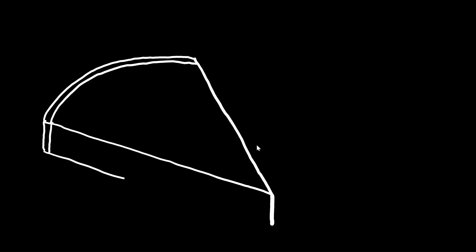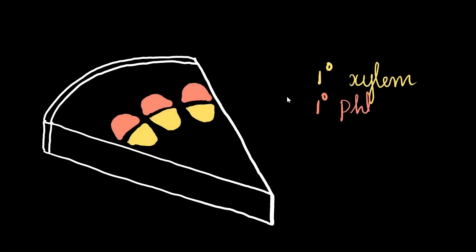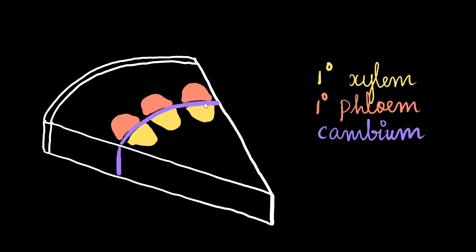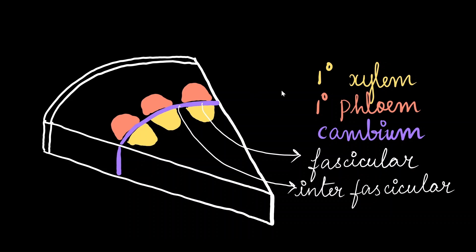So this is a look at the vascular bundles in our dicot stem. We have our primary xylem and primary phloem, and in between them, we have the cambial tissue. The cambial tissue in between the xylem and phloem is called the fascicular cambium, and those in between two bundles are called the interfascicular cambium, and together they form the vascular cambium.